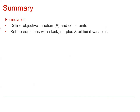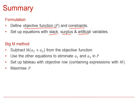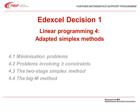In summary: we formulate the linear programming problem in the same way by defining an objective function and constraints, then set up the equations using slack, surplus, and artificial variables. For the Big M method, we subtract M multiplied by the total sum of the artificial variables — there could be one, two, or more — from the objective function. We then use the other equations to eliminate the artificial variables, set up a tableau with the objective row containing M, and maximise p in the usual way. This concludes the section on adapted simplex methods.